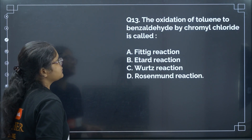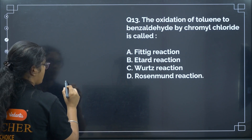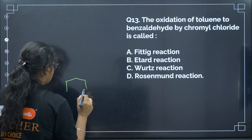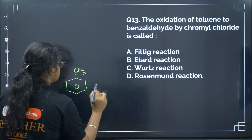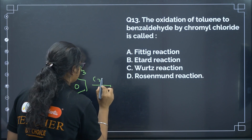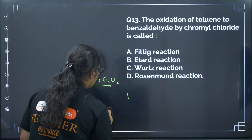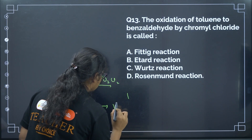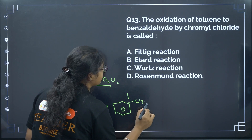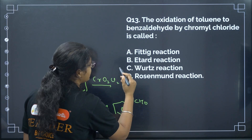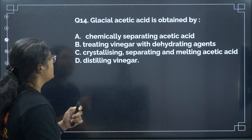Next: the oxidation of toluene to benzaldehyde by chromyl chloride is called? This is a very famous name reaction. When toluene (CH3 group) is treated with CrO2Cl2, an intermediate is formed and finally benzaldehyde is obtained. This reaction is called the Etard reaction. Correct answer: Etard reaction.